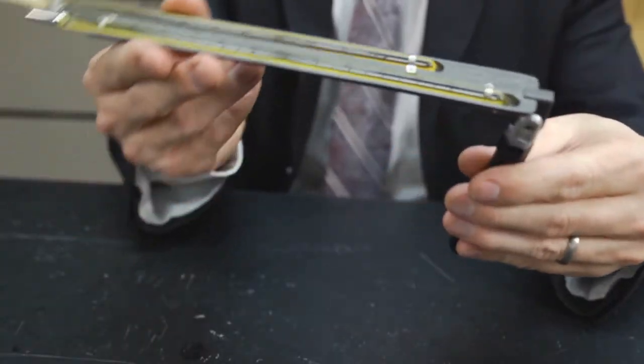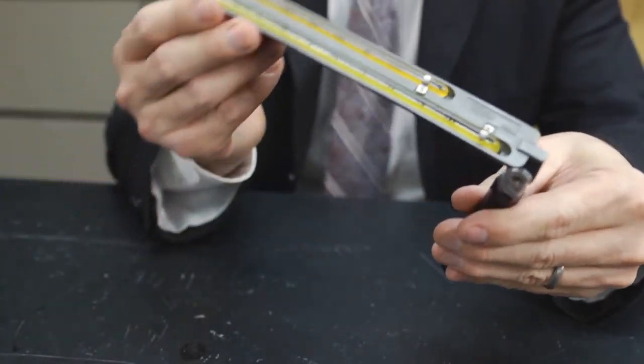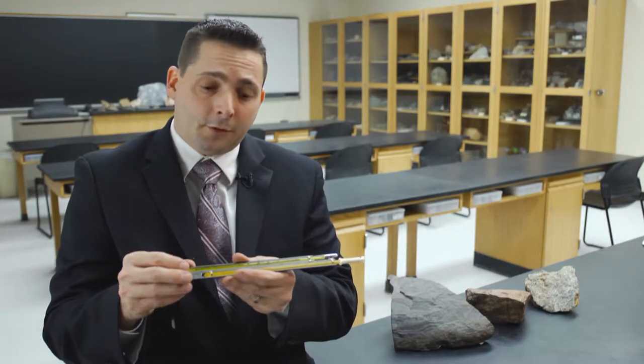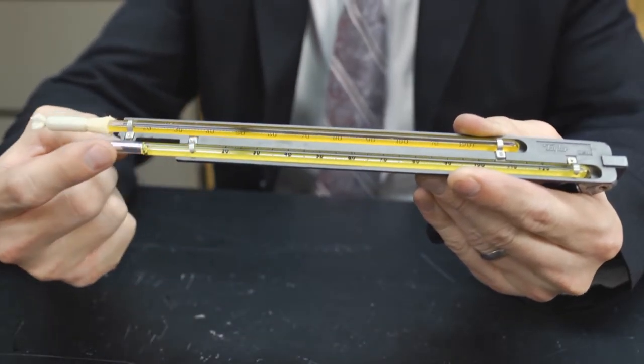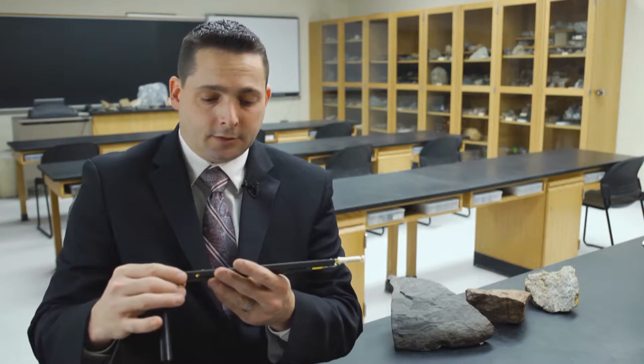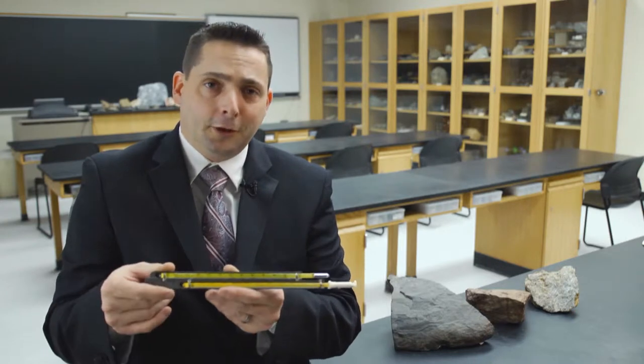The first component is a sling which houses two thermometers. In this case, we have two mercury thermometers. The first one is a dry bulb that simply measures the temperature of the air. And as you can see today, it is 73 degrees.